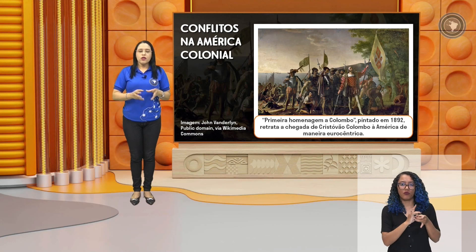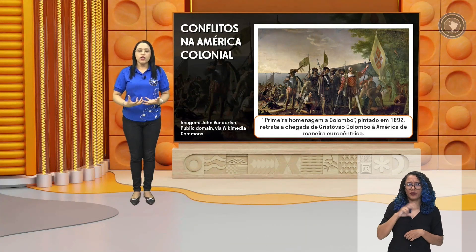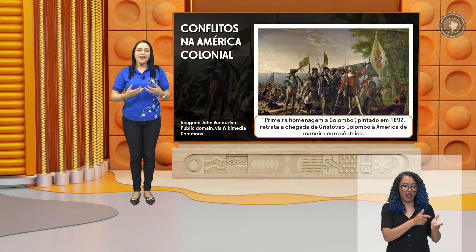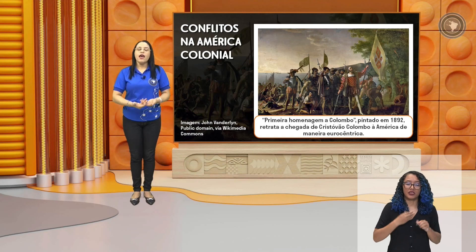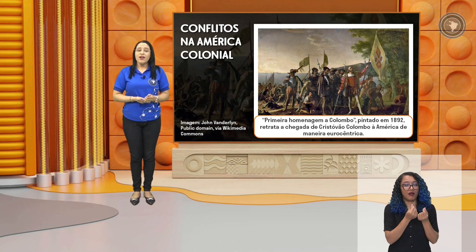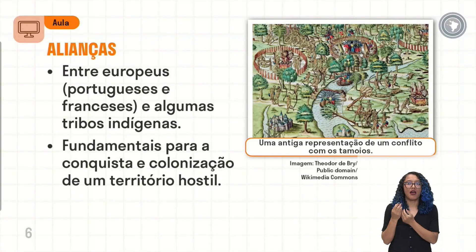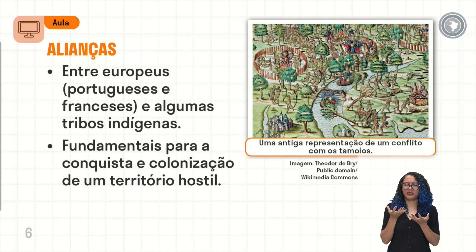Nesse contexto, tanto a coroa portuguesa quanto a coroa espanhola vão querer manter a posse do seu território. Para se garantir a posse, é preciso estar presente, se fazer naquele local e fazer com que aquelas terras se tornem produtivas para as coroas. Vamos observar as alianças que vão ocorrer entre europeus — tanto portugueses e franceses, que também vão querer uma parte do território para aumentar seus domínios — e algumas tribos indígenas.